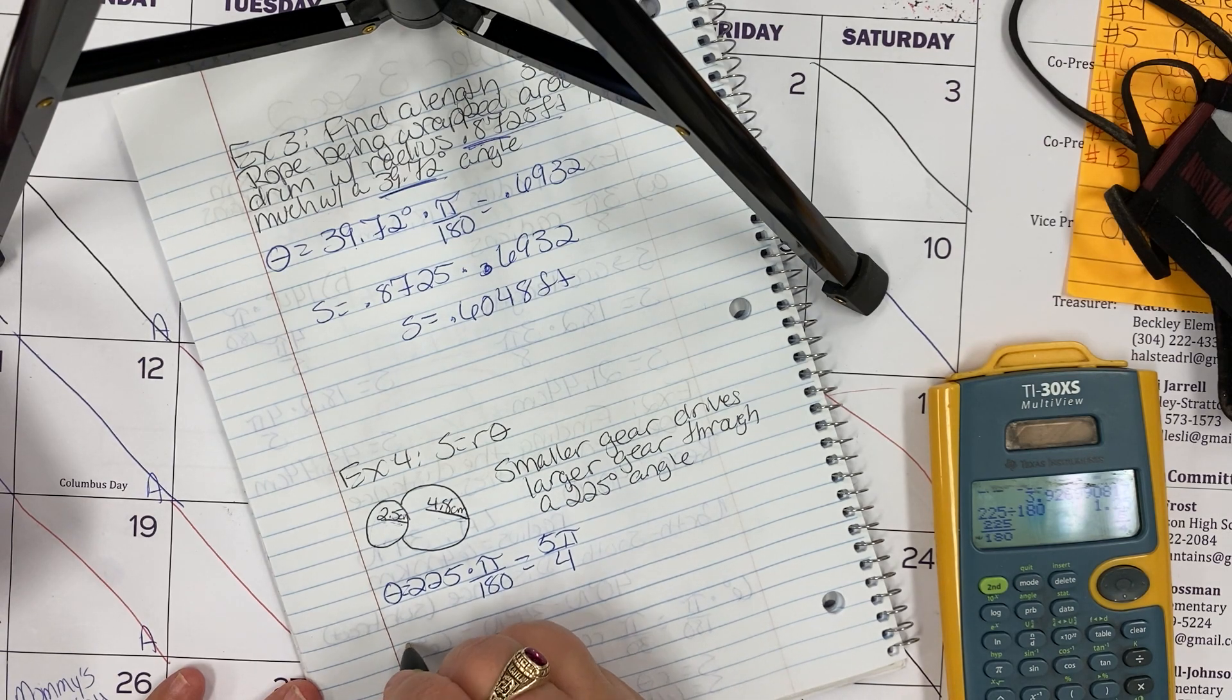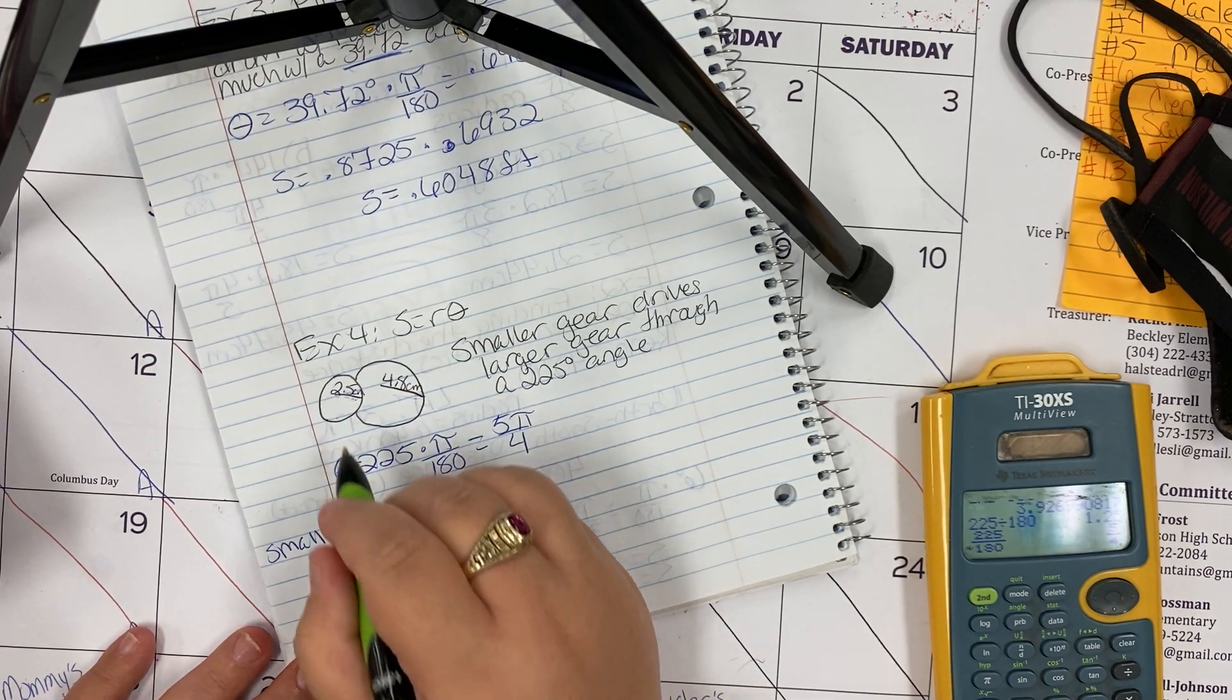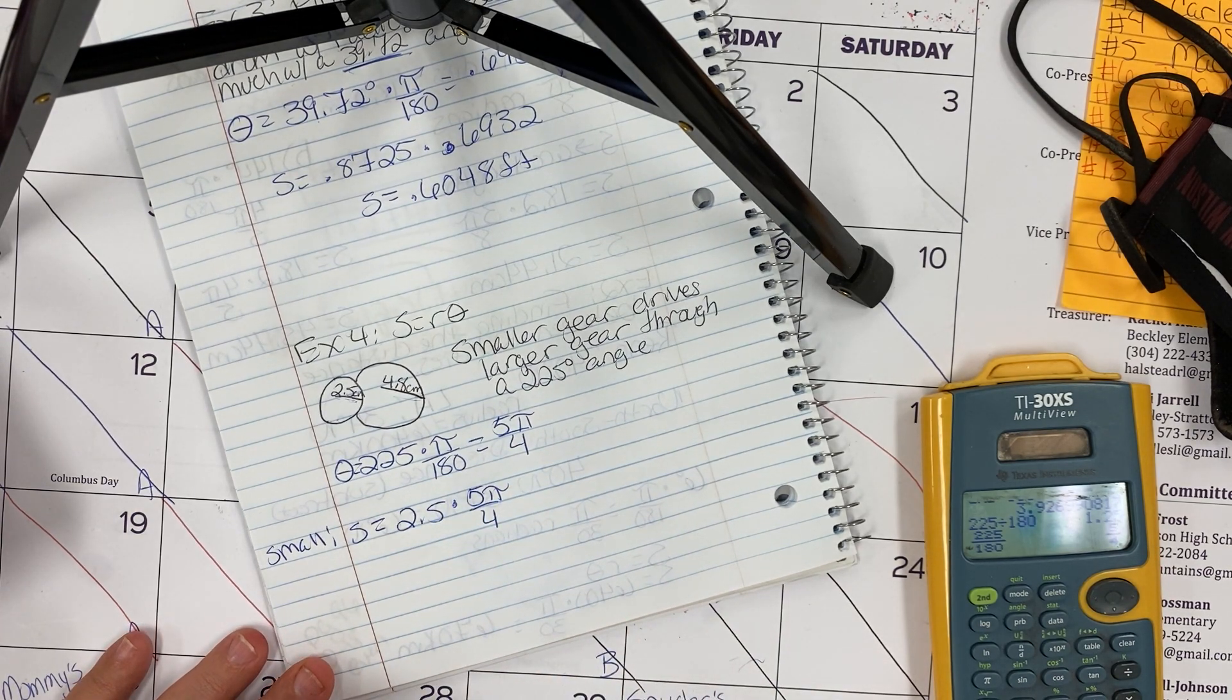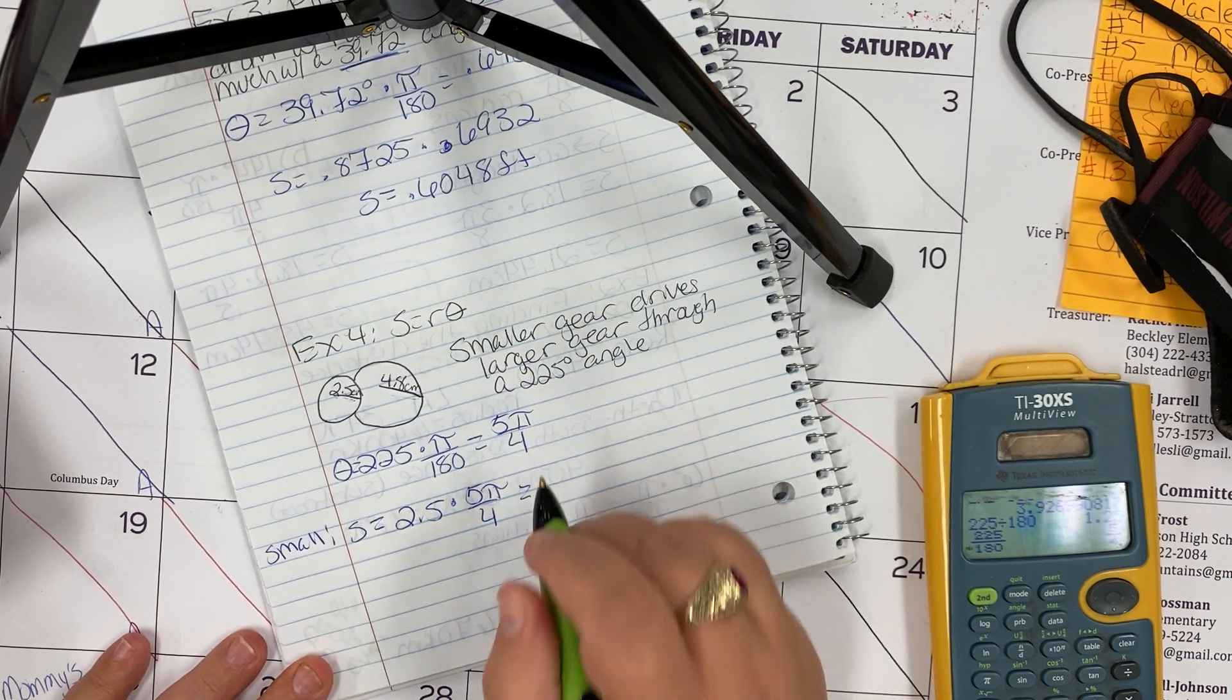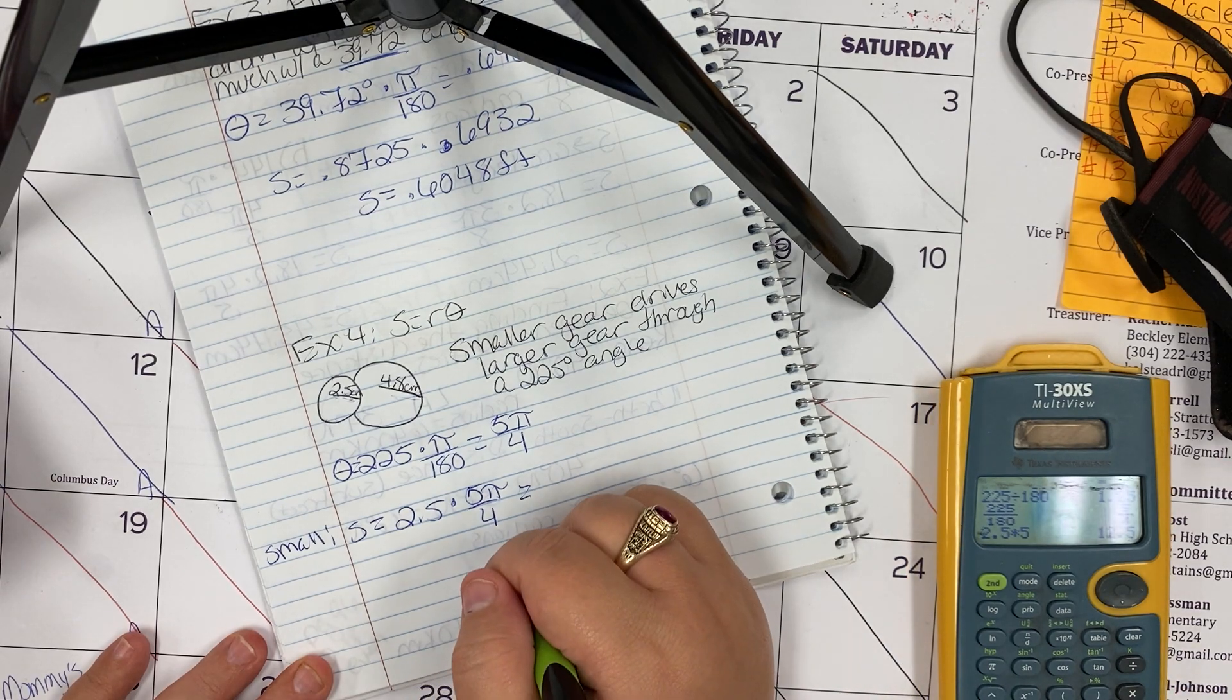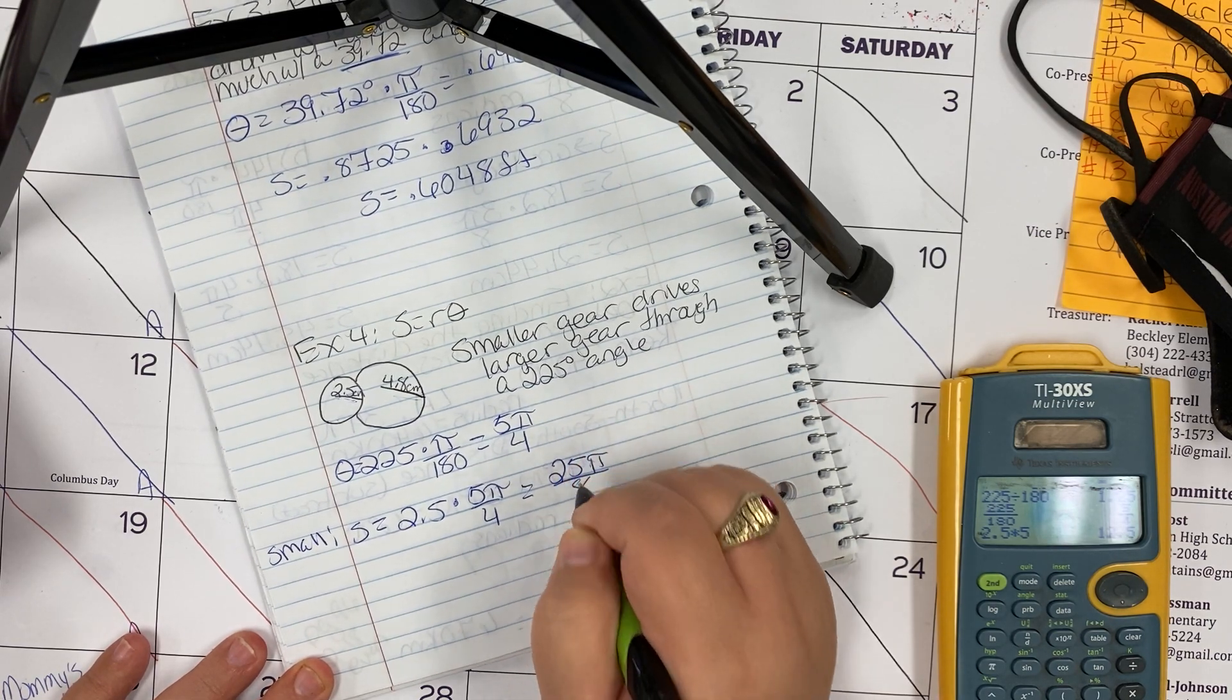So for the small gear, s is going to equal that 2.5 radius times 5π over 4. This will give me an answer for the small gear of 25π over 8.